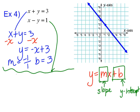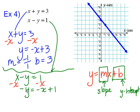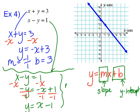Now we'll work on the second equation: x minus y equals one. First we isolate y by subtracting x from both sides, giving us negative y equals negative x plus one. We don't want the opposite of y, so we multiply everything by negative one, giving us y equals x minus one. The slope is one over one and the y-intercept is negative one. We plot a dot at negative one on the y-axis, rise one box, run one box, and you'll see the two lines will collide.